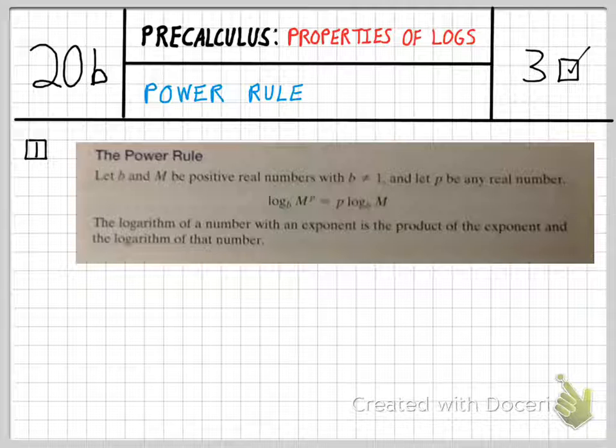This one says that if you take the log of a number that has an exponent, that exponent can basically be moved out in front of the logarithm as a multiplication problem. So log base b of M to the p power is equivalent to p times log base b of M. Let's look at a quick example of that.